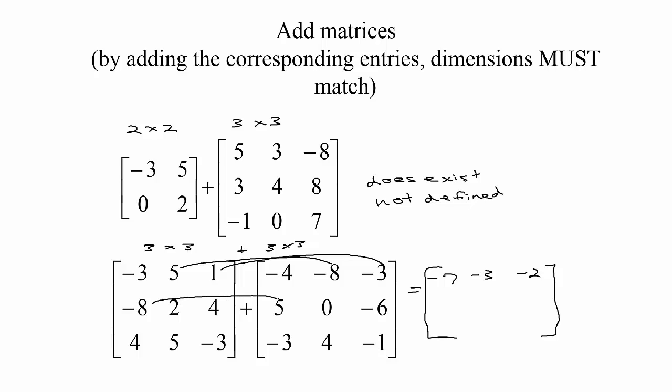Negative 8 and 5 would be negative 3, 2 and 0 would be 2, 4 and negative 6 would be negative 2, 4 and negative 3 would be 1, 5 and 4 would be 9, and negative 3 and negative 1 would be negative 4. Adding matrices is really simple—as long as they're the same size, just add the corresponding entries.